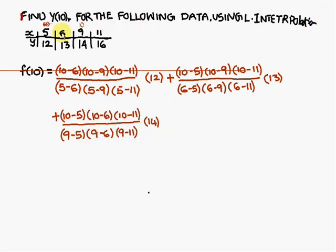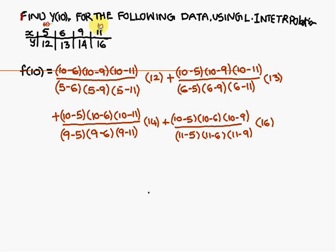Similarly, move 10 to the third place above x=9 and compute that term, then move to the last value x=11 and do the same. After simplifying all the terms, you get the value as 14.67. Since x=10 lies between 9 and 11, the answer should be between 14 and 16, and 14.67 falls in that range, confirming the answer is correct.